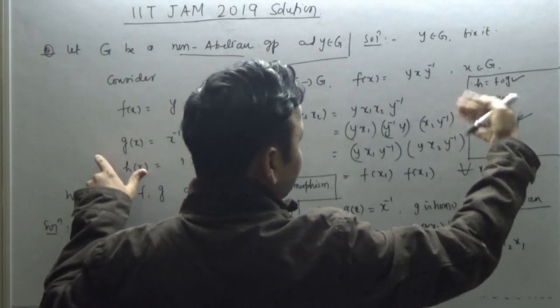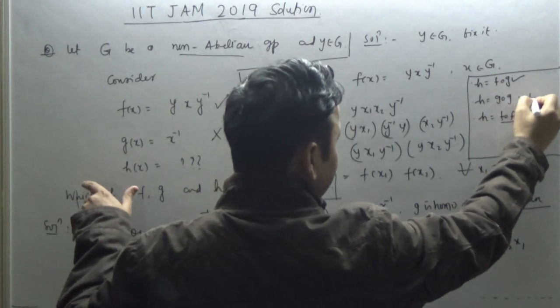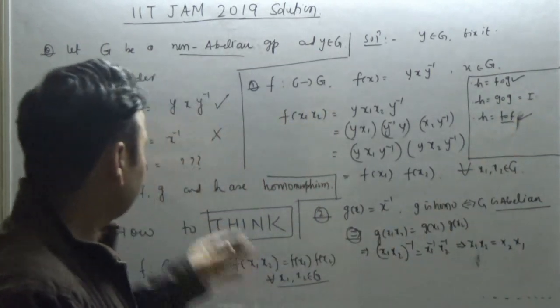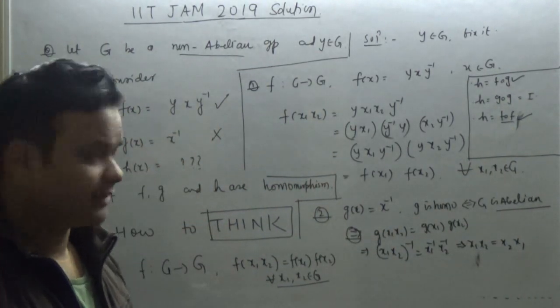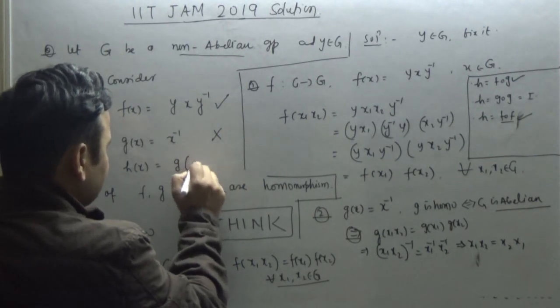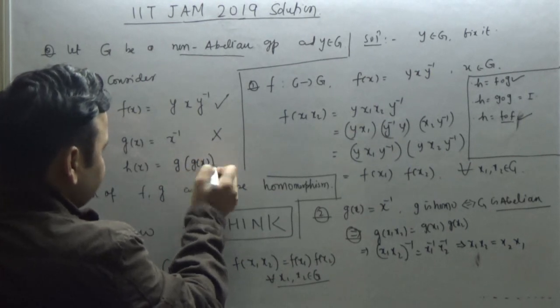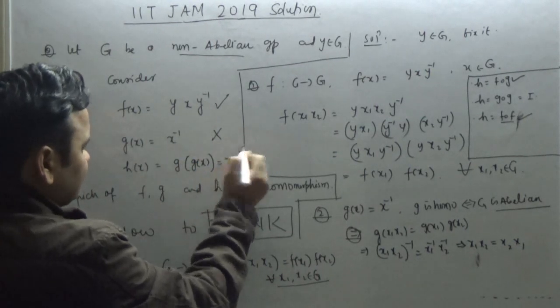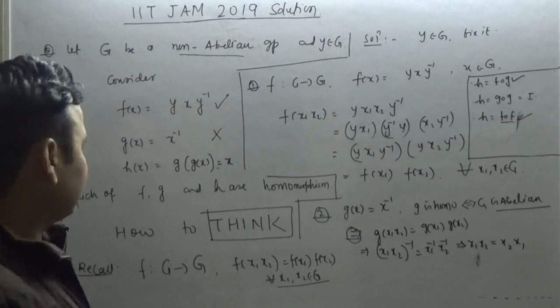What is g compose g? If you compose g two times, this is nothing but the identity function. Inverse of inverse is identity. So I hope if this is the case, h is nothing but g acting on g(x), so this is nothing but x. This is inverse of inverse.